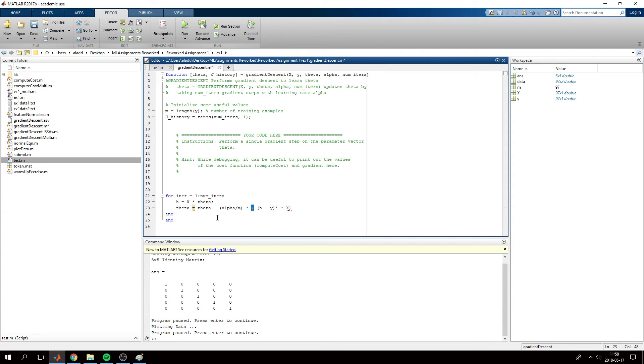So that will give us a 1 by 2 vector. And the only thing we need to change now is to make this a 2 by 1 so that we can subtract theta minus this. And that should be our code.